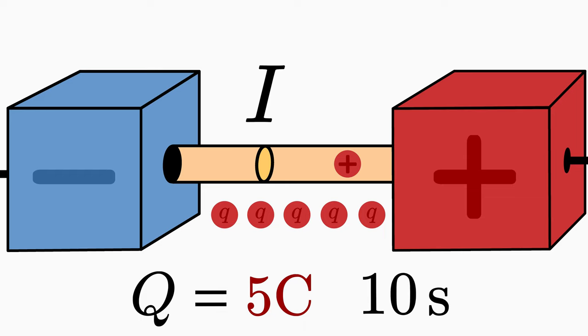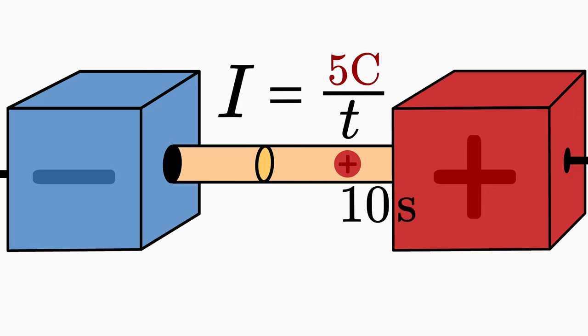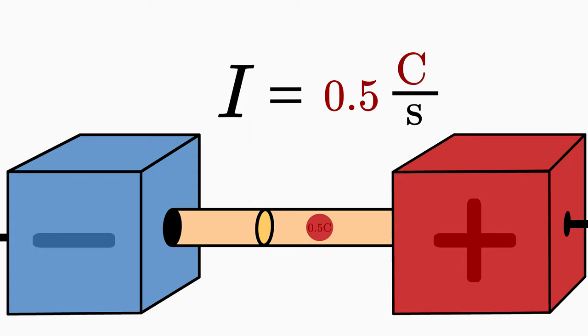To find out the current I, we should answer the question, how much charge per time has passed through the cross-sectional area? Well, there were 5 Coulomb per 10 seconds, so capital Q divided by t. That's 0.5 Coulomb per second. So 0.5 Coulomb of charge is transported through this cross-sectional area every second. The unit Coulomb per second is abbreviated to A. A stands for ampere.